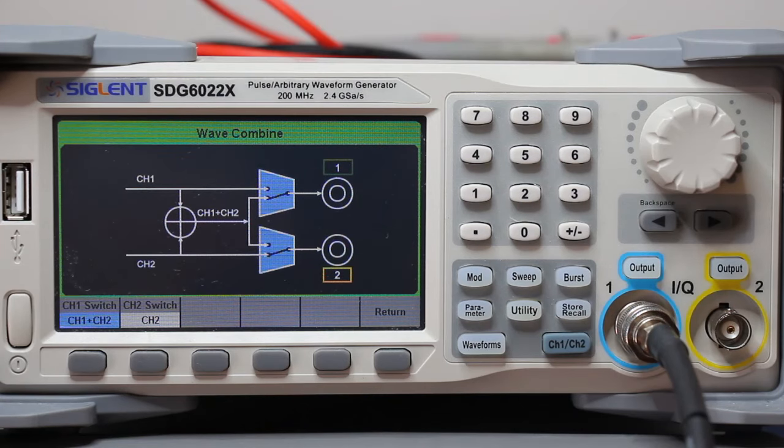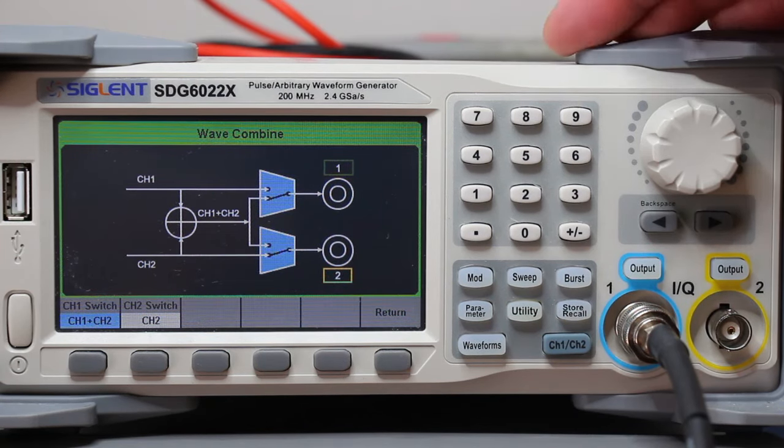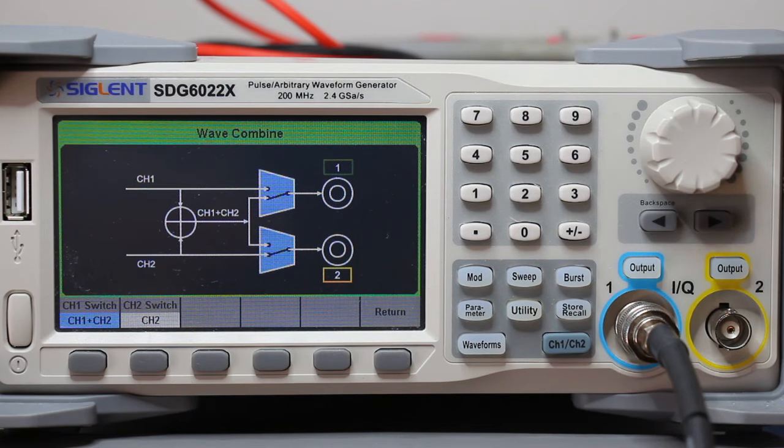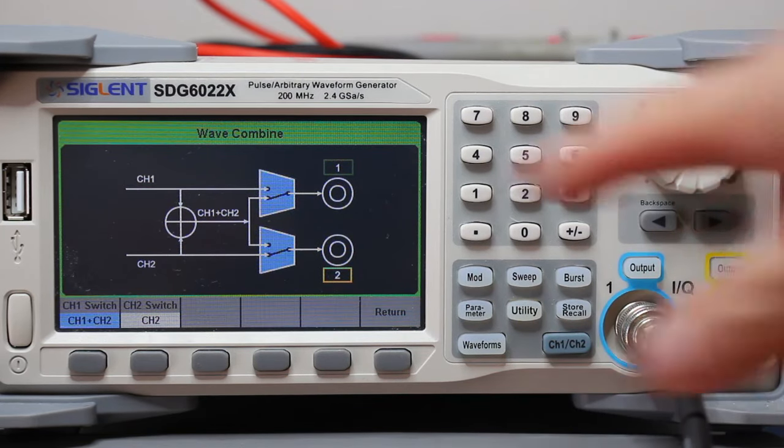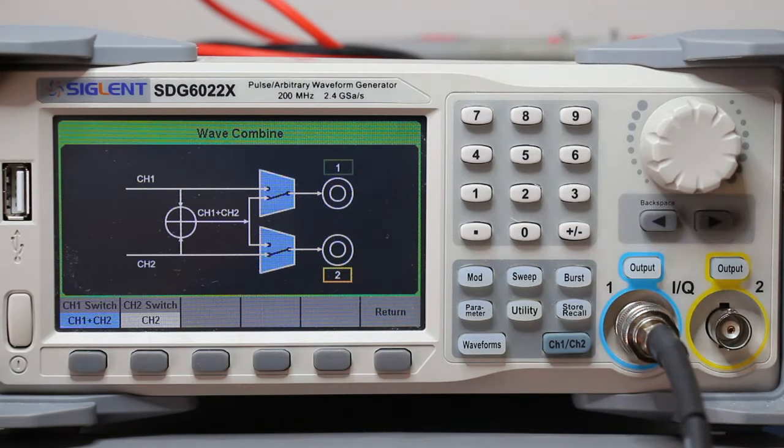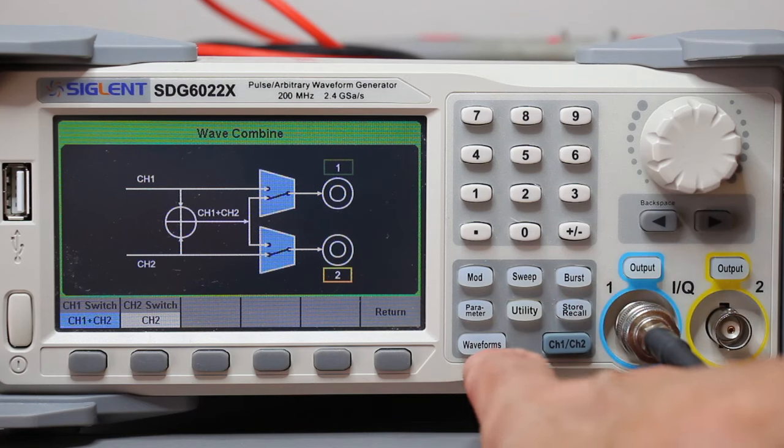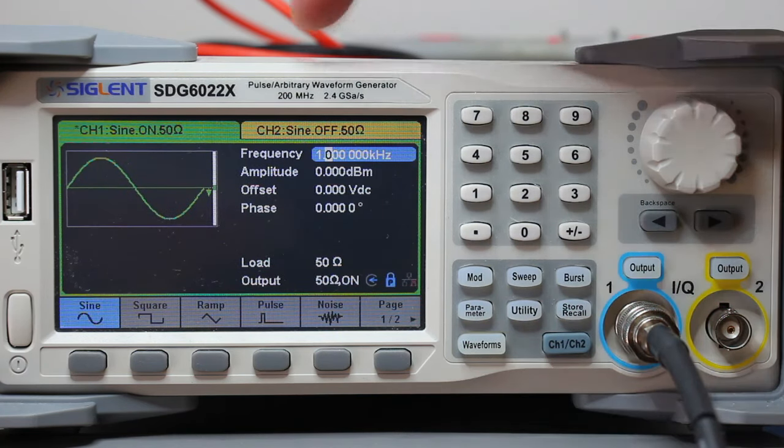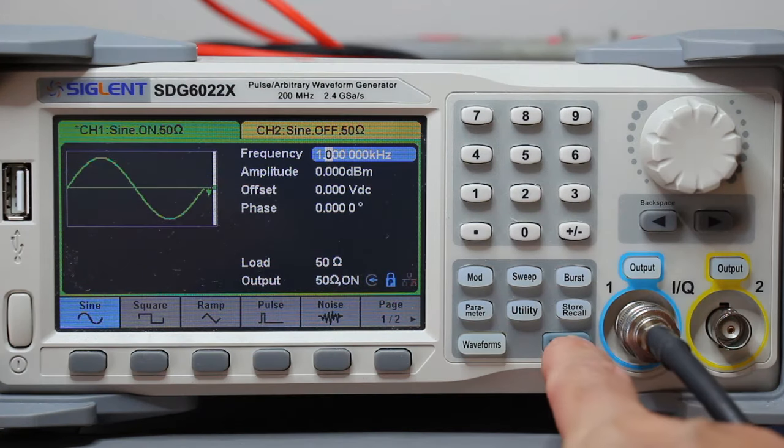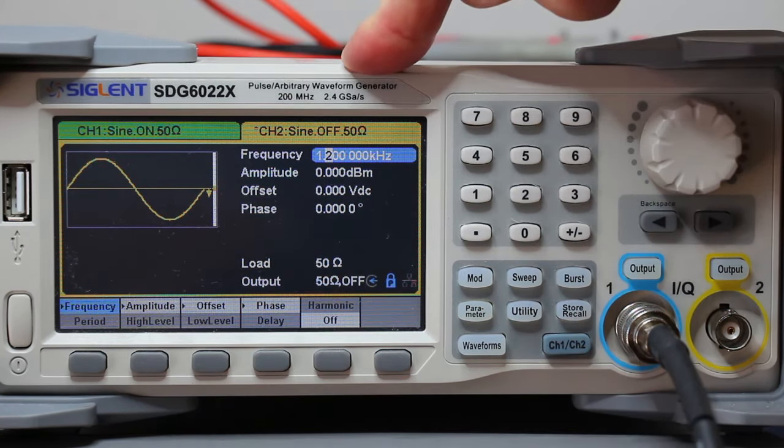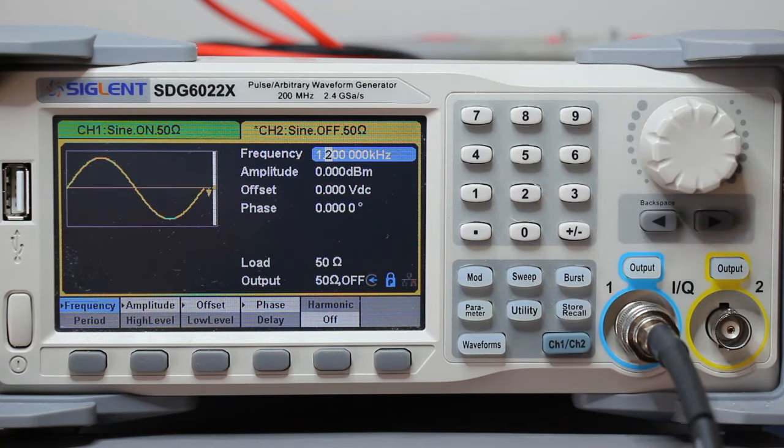For the tests I will be using this waveform generator here, initially programmed to output two independent tones combined in channel 1, as shown in this schematic. The first tone is 1 kHz and the second tone is 1.2 kHz, or 200 Hz apart. The level is 0 dBm.